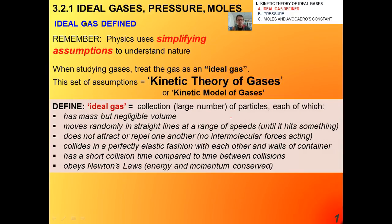So we're going to define an ideal gas as a collection of particles which has the following characteristics. The first one is that this collection has a mass but negligible volume. So we don't consider the volume of each individual particle when we're dealing with ideal gases. Each particle moves randomly in straight lines at a range of speeds until it hits something. Each particle does not attract or repel one another, no intermolecular forces. Each particle collides in a perfectly elastic fashion with each other and the walls of a container, each of which has a short collision time compared to time between collisions, and each of which obeys Newton's law, which means that energy and momentum would be conserved.